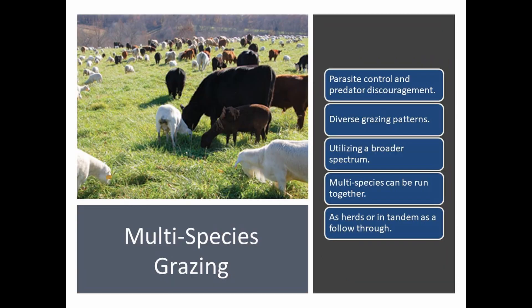Another way to address all this is through multispecies grazing, which has numerous beneficial effects. It results in parasite control and predator discouragement. It also enhances diverse grazing patterns, utilizing a broader spectrum of plants. Multispecies can be run together as herds or in tandem as follow-through.